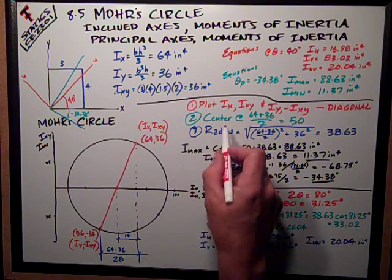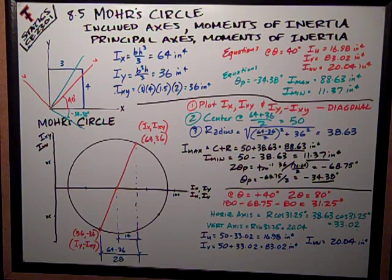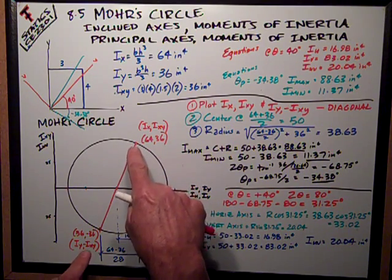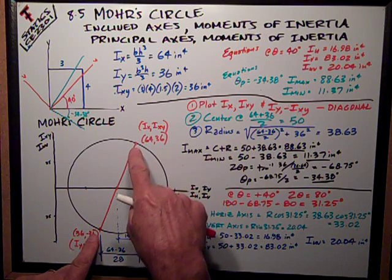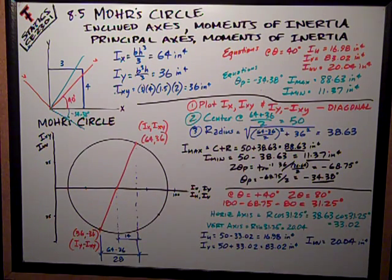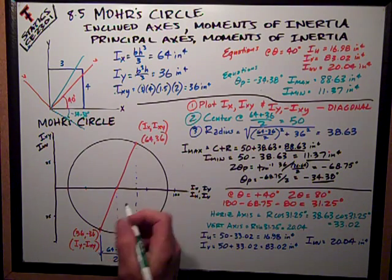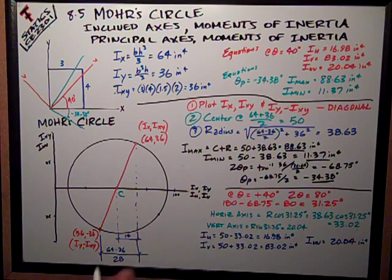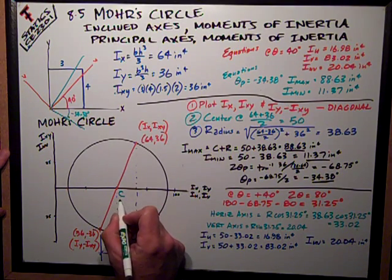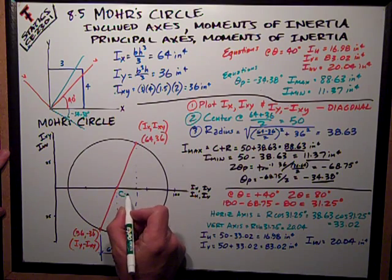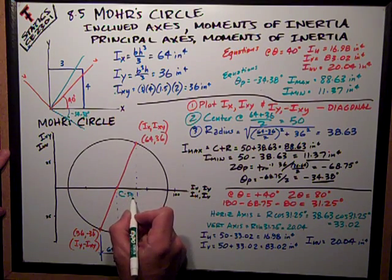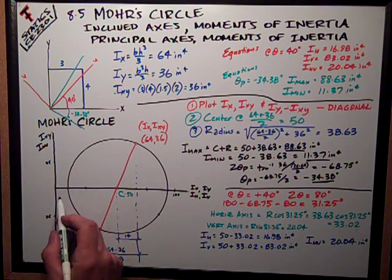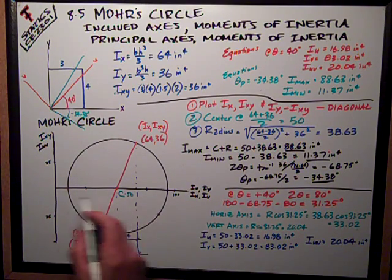Then, I note that my center is at the halfway point between ix, sort of the average of ix plus iy, 64 plus 36, divided by 2 is 50. So my center is right here in the middle along the horizontal axis. I'm not going to write that its vertical coordinate is zero because it's on the horizontal axis.